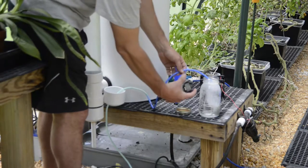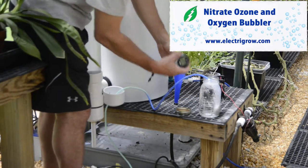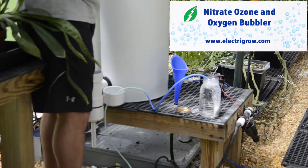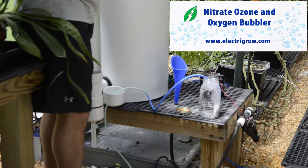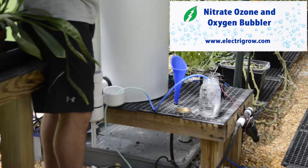We're going to do a test by bubbling water into a quart jar. This is in our ElectroGrow test greenhouse, and we're going to run it for several minutes and then test how much nitrate we actually put in this water.